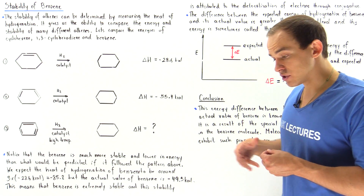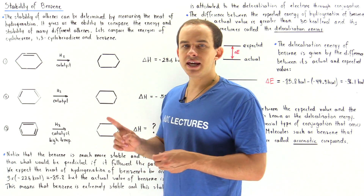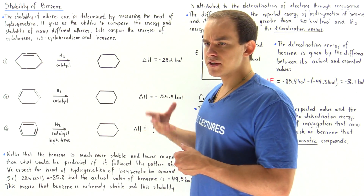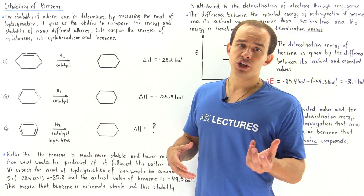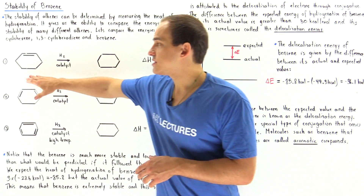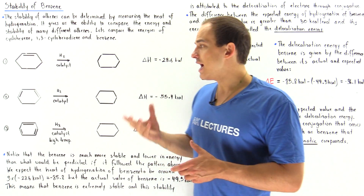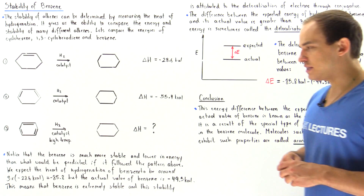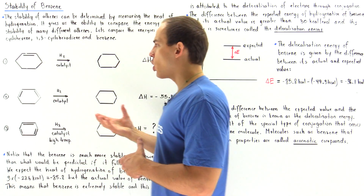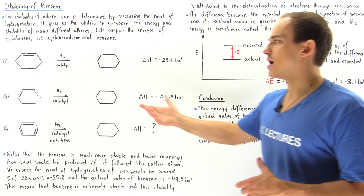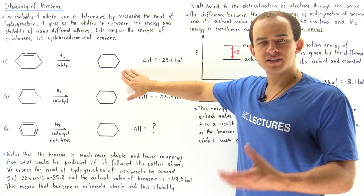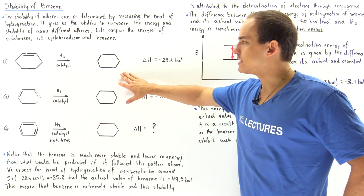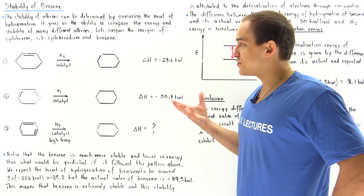The way we're going to determine this energy of the special type of conjugation in benzene is by using the heat of hydrogenation. Whenever we want to compare the stability of different types of alkenes, we use the heat of hydrogenation. In this lecture, we're going to compare cyclohexene, 1,3-cyclohexadiene, and 1,3,5-cyclohexadiene — also known as benzene. Let's begin by allowing cyclohexene to undergo the hydrogenation reaction in the presence of a catalyst to produce cyclohexane.